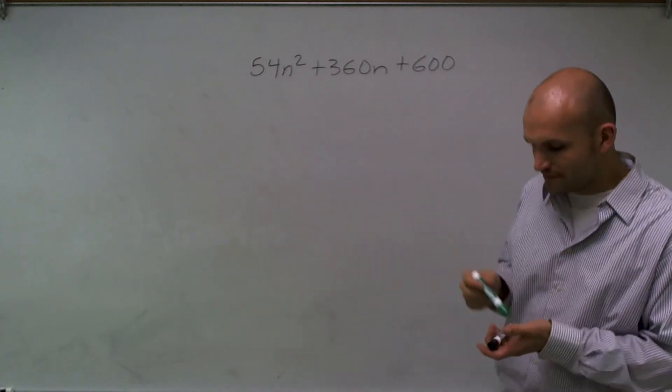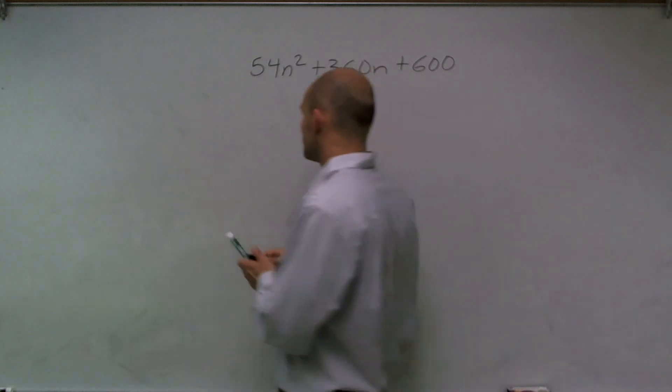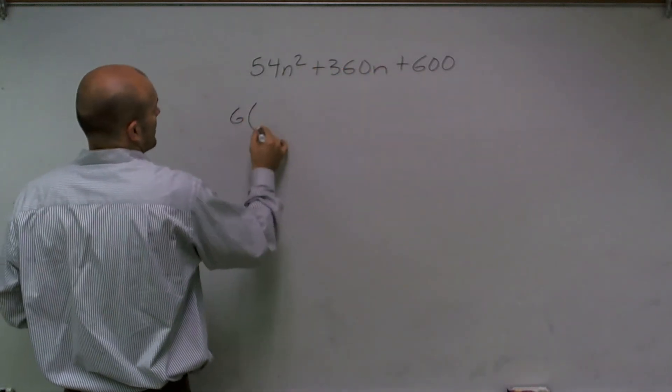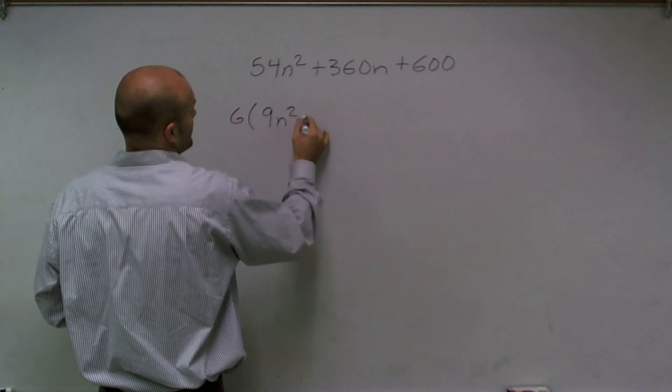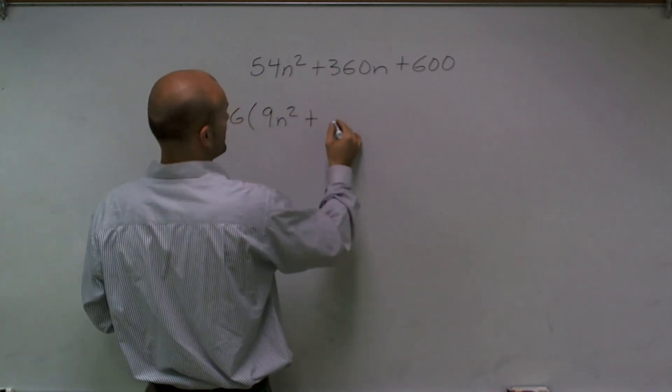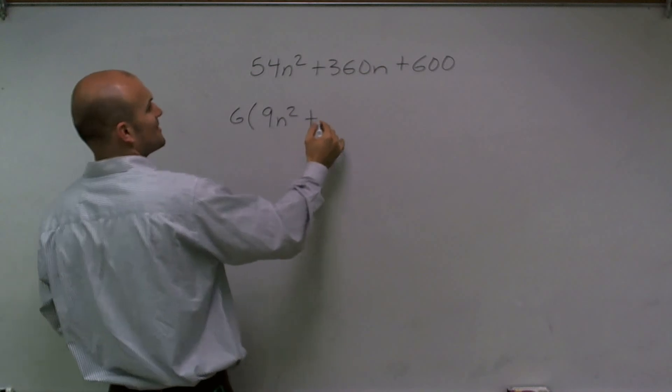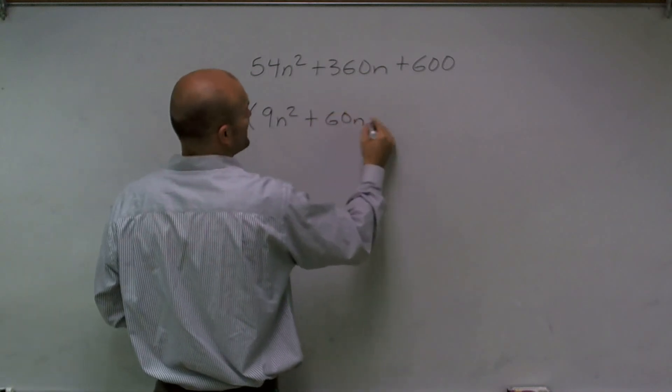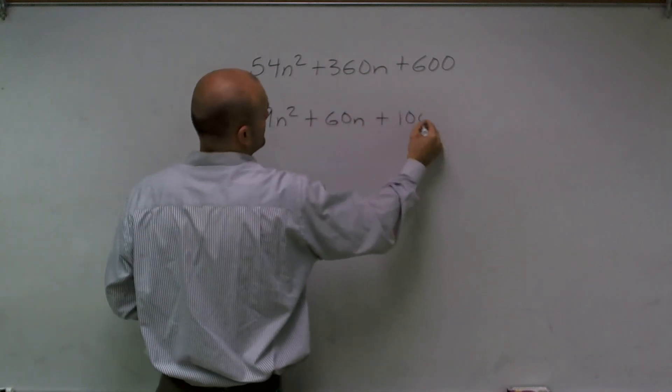So what I'll do is I'm going to factor out a six. And when I do that, I'm left with 9n squared plus 60n plus 100.